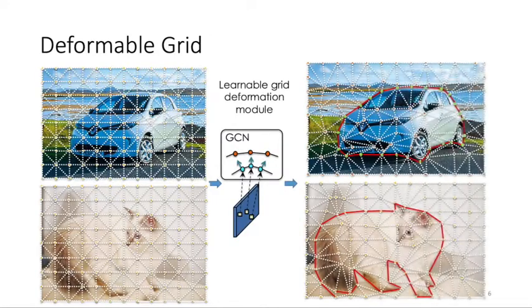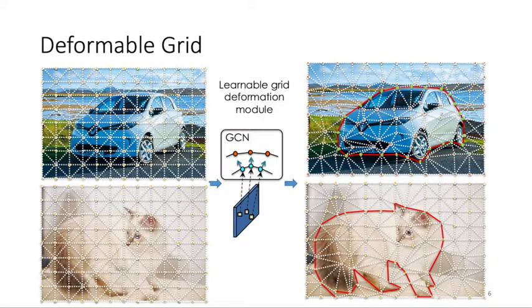In this paper, we present deformable grid, a neural network module that represents an image with a 2D grid, whose edges align with image boundaries. We argue that by operating on the deformed grid, image understanding can be more efficient and effective than operating on fixed grids.